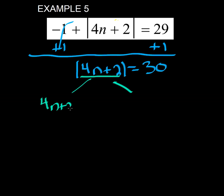4n plus 2. I'm going to keep 4n plus 2, but I'm going to change the 30. It's going to stay 30 here, but change to negative 30 over here.